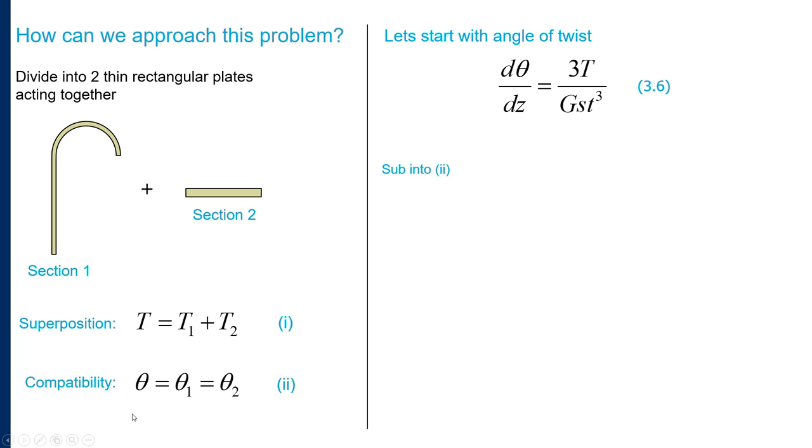Now we can take this equation and substitute it into equation II. Our compatibility equation says that the angle of twists are equal. So we can directly take this and say that 3T1/(Gs1·t1³) must equal 3T2/(Gs2·t2³). We see immediately that the 3s will cancel out and our shear moduli will cancel out.